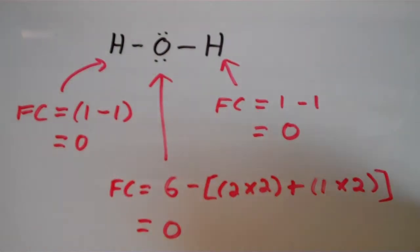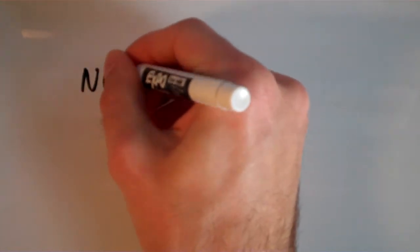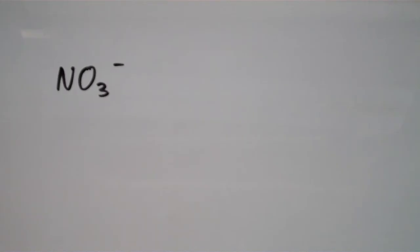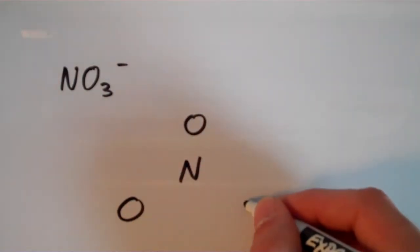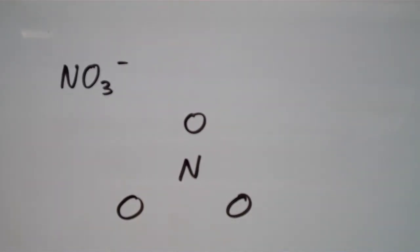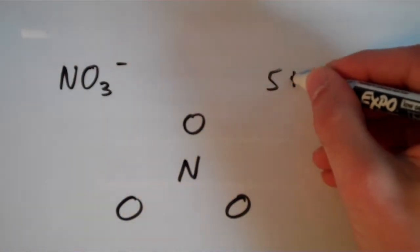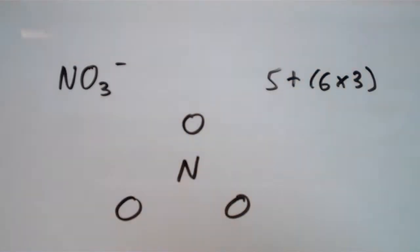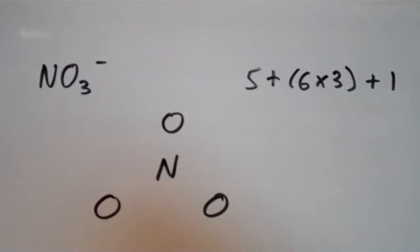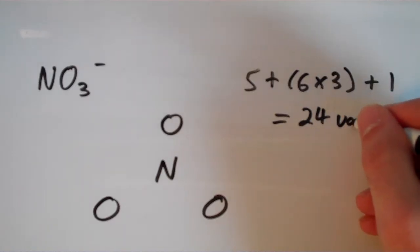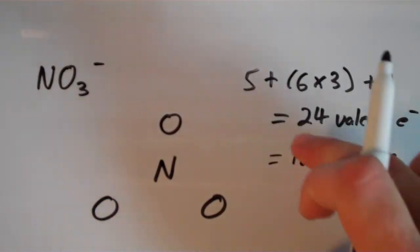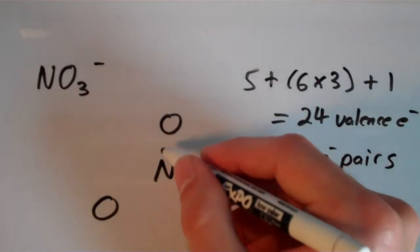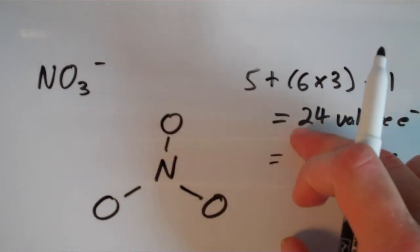Now let's do the Lewis structure for the nitrate ion, NO₃⁻. The skeletal structure has nitrogen in the center. Counting total valence electrons: nitrogen has five, oxygen has six and there are three of them giving eighteen, plus one for the negative charge, totaling 24 valence electrons, or 12 electron pairs. We place one pair between each pair of atoms, using three pairs, leaving nine pairs to distribute as lone pairs on the oxygens.